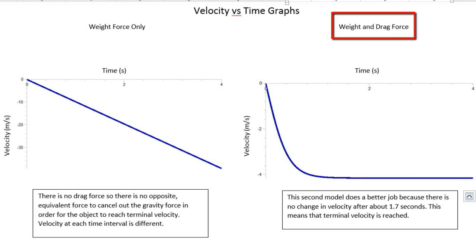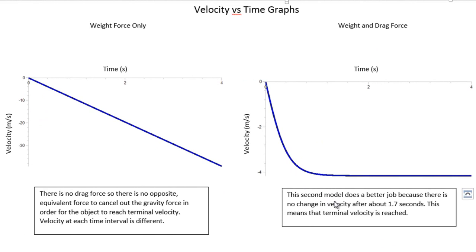Terminal velocity is achieved because the object has enough drag that is equivalent to the weight force, so net force is zero, meaning velocity is constant. Gravity was the prevalent force in the beginning, which is why the graph was curved initially. But later it becomes linear due to the zero acceleration and constant velocity.